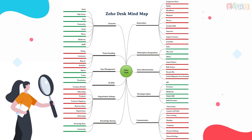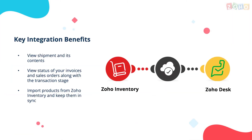That will help you better support your customers. Imagine a scenario where your customer support person needs to process a product replacement. First, they'll have to check the support request in your customer service application, then check the product information from your inventory management system — and depending on what system you're using, this can be a tedious and time-consuming process.